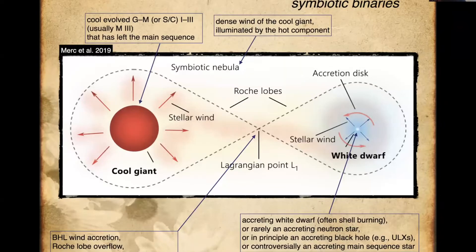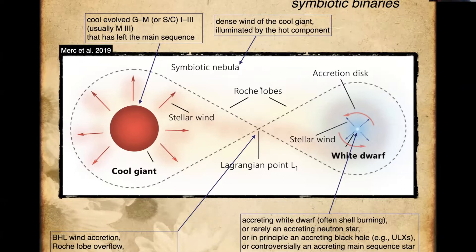A symbiotic star is a binary comprised of a cool giant accreting onto usually a white dwarf. You have an accretion disk around the white dwarf very often, and sometimes you can have nuclear burning on the surface of the white dwarf. The accretion disk, possibly with the addition of the burning white dwarf, can illuminate the dense wind nebula of the mass-losing red giant, giving you a spectrum that looks like bright emission lines on top of what can otherwise look like just a red giant.